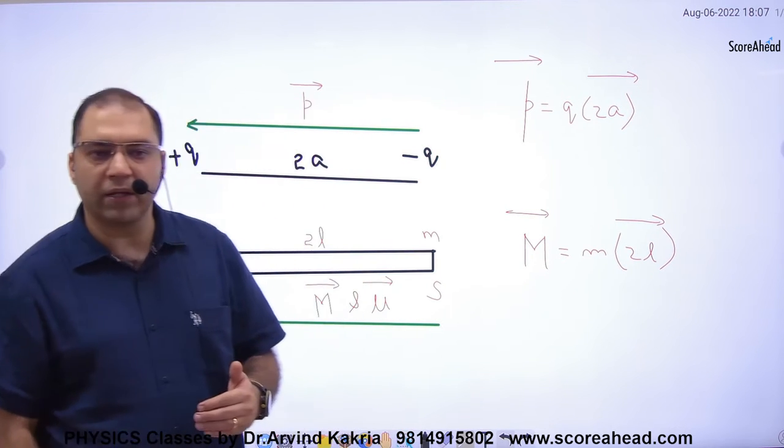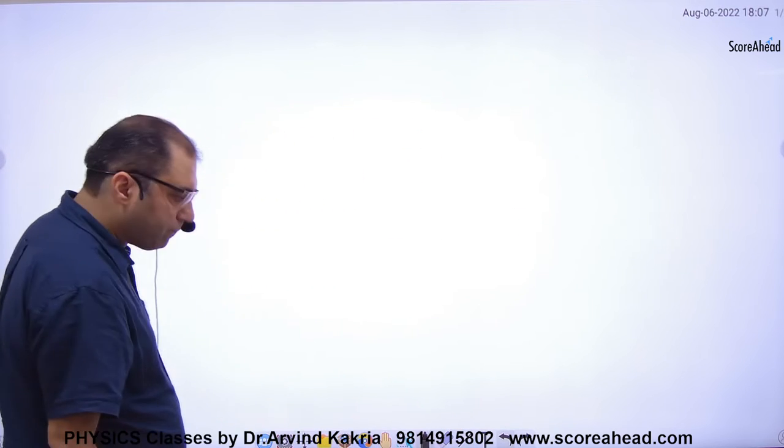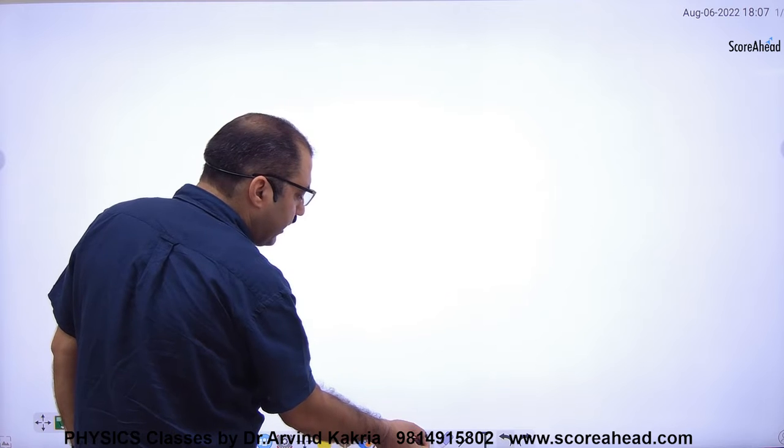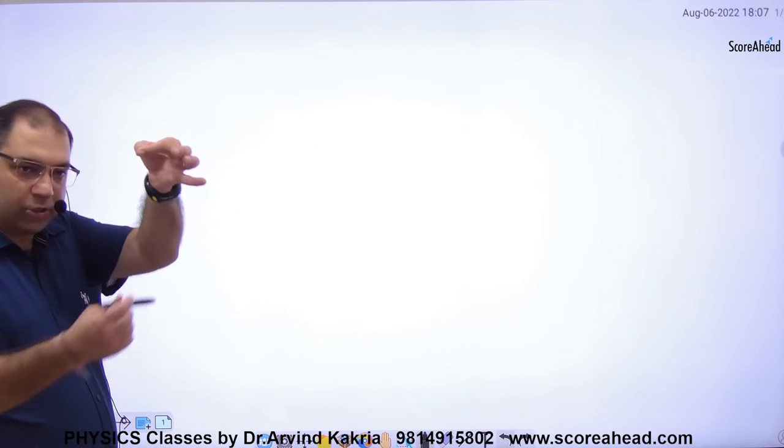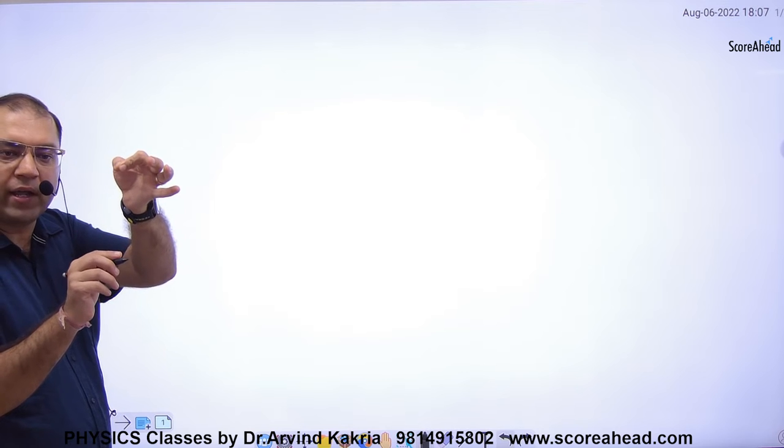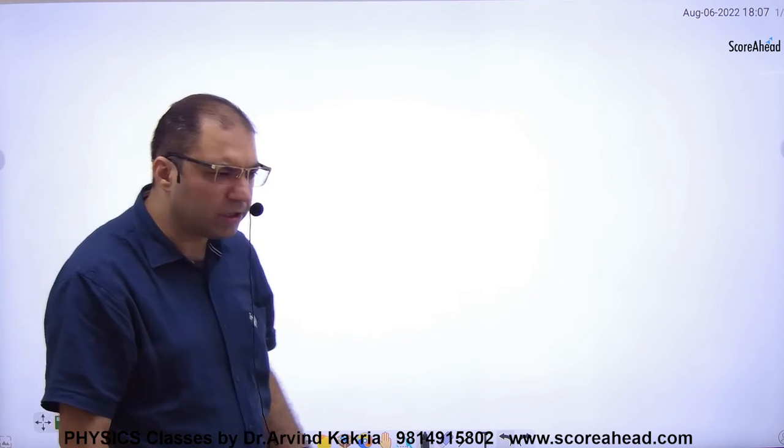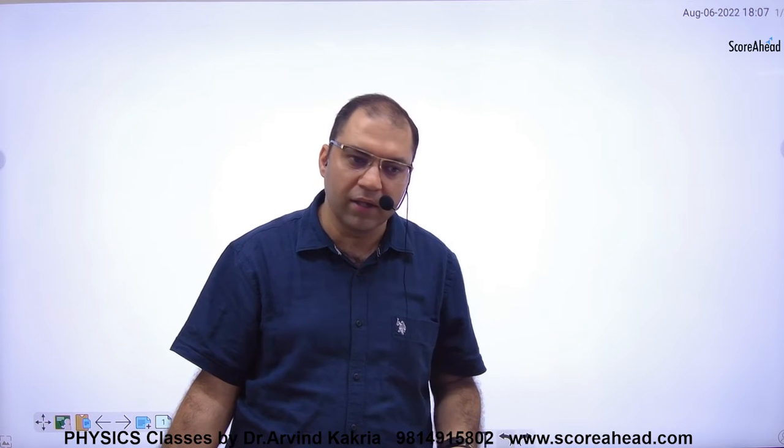Bar magnet ki kuch properties hai. Bar magnet ki pehli property hai: jab bhi aap kisi bhi bar magnet ko dhaage se latka doge, to woh move karke magnet ka north kaha point karega, earth ke north ko. Magnet ka north, earth ke north ko hi hota hai. Aisa kaise? Jabki north and south hota hai attract hoga, lekin yahan par north-north hai.